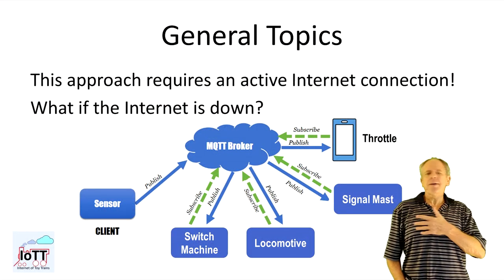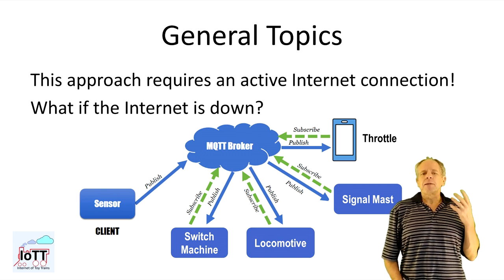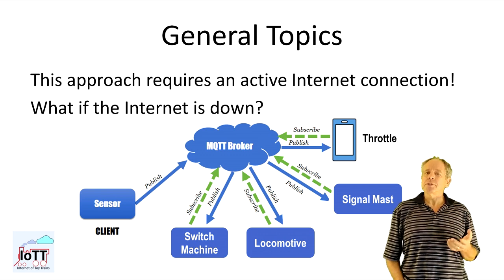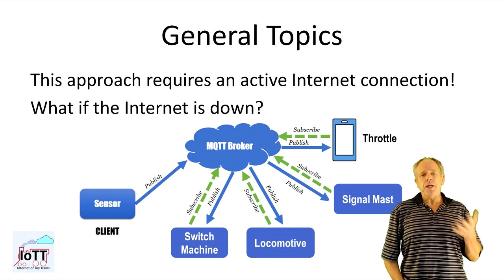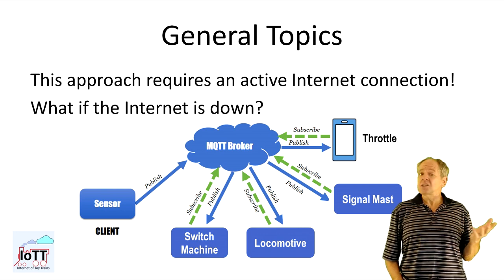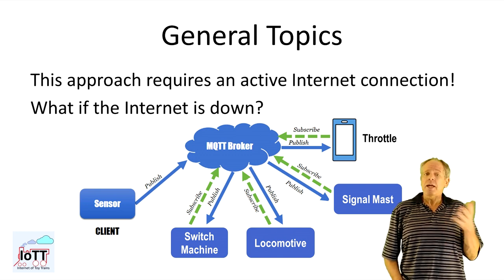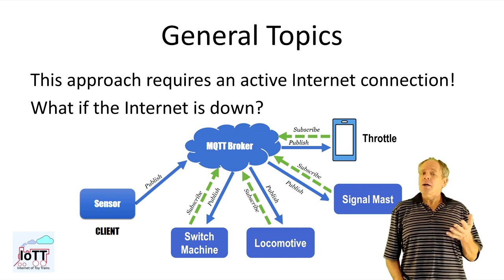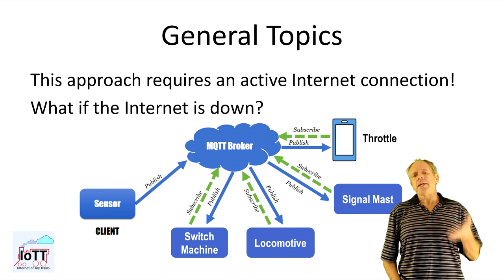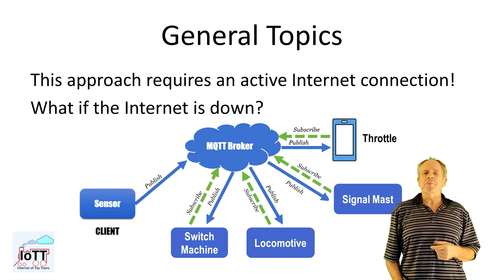One question that came up right away was: what happens if the Internet is not working? My demonstrations in the last video made use of the Internet and public MQTT servers because I wanted you to have something you can play with. But for a local layout control implementation, the Internet is not needed. A meaningful minimum infrastructure is a Wi-Fi router for the MQTT devices to connect to — the router can but does not have to have an Internet connection — plus a computer running an MQTT broker and a gateway for the message exchange between layout and Wi-Fi. That's it.